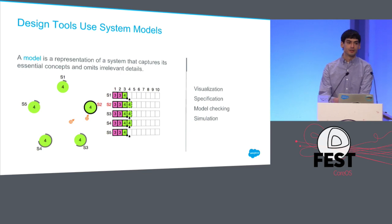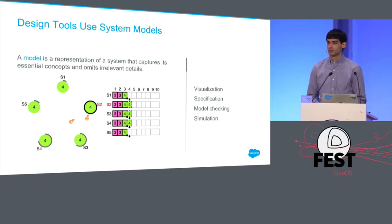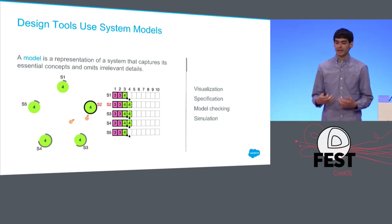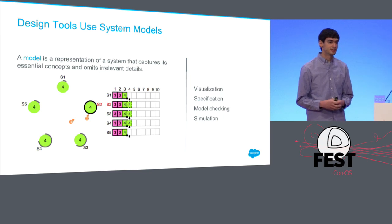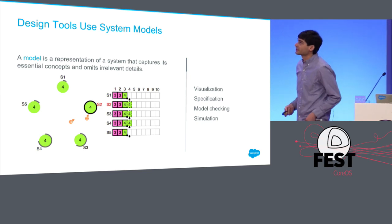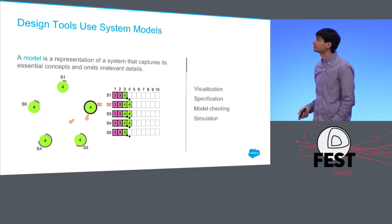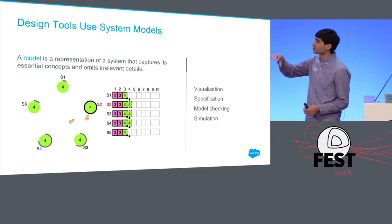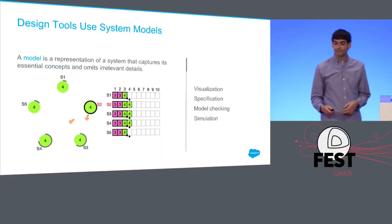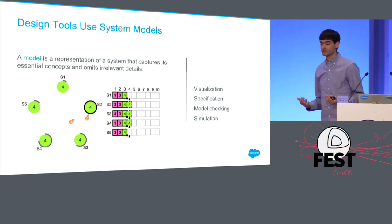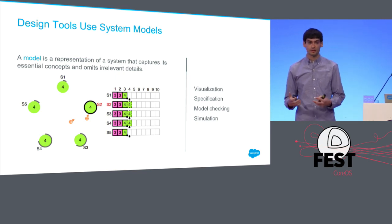What do these things have in common? They all rely on system models. A model is a representation of a system that captures its essential components and omits irrelevant details. Here's a visualization of Raft called Raftscope that I built. It's very clear to see the system model: the network is flat, messages go directly from one server to another, we're not worried about writing to disk, and there are no clients represented — client requests just appear.